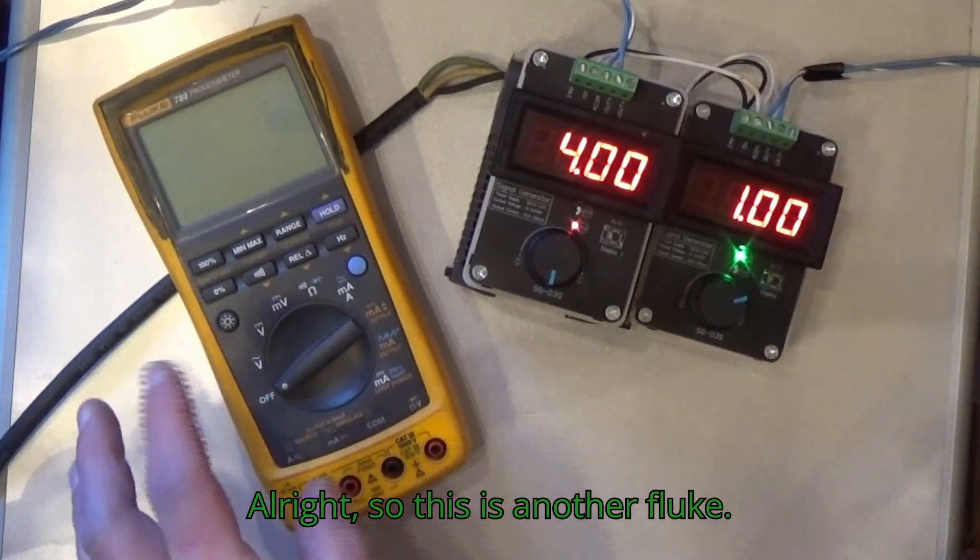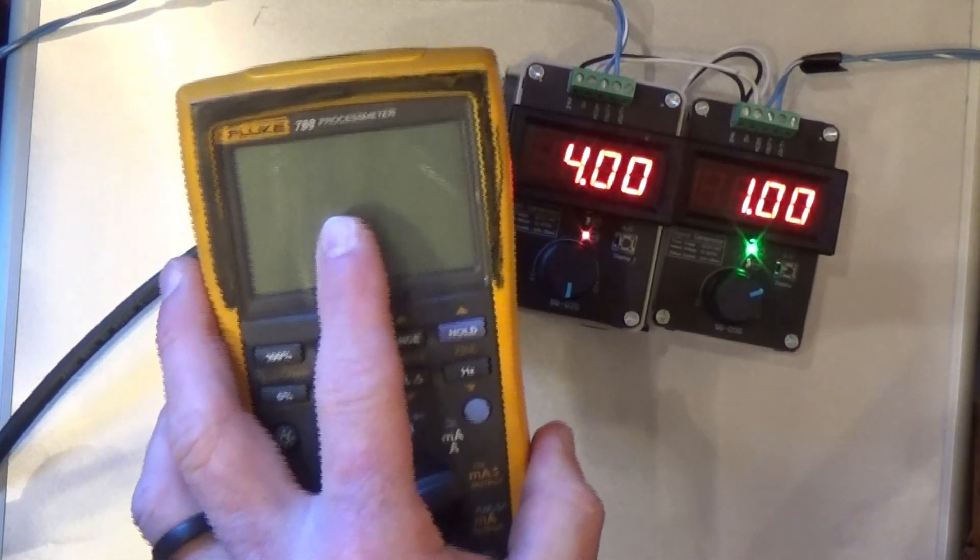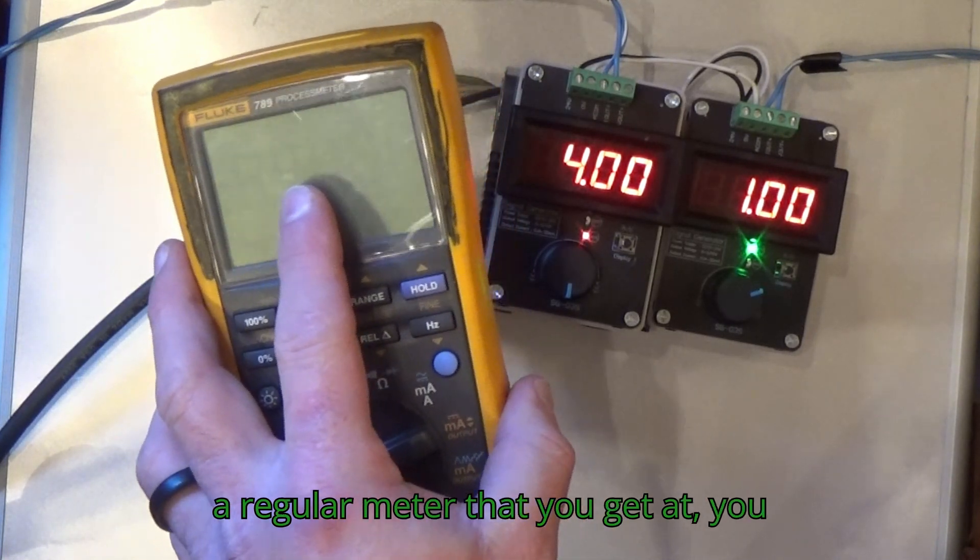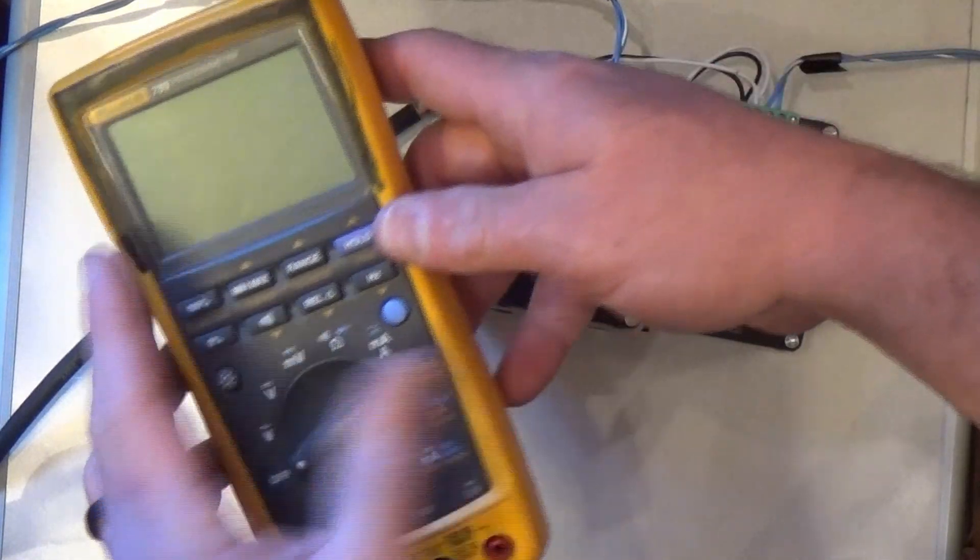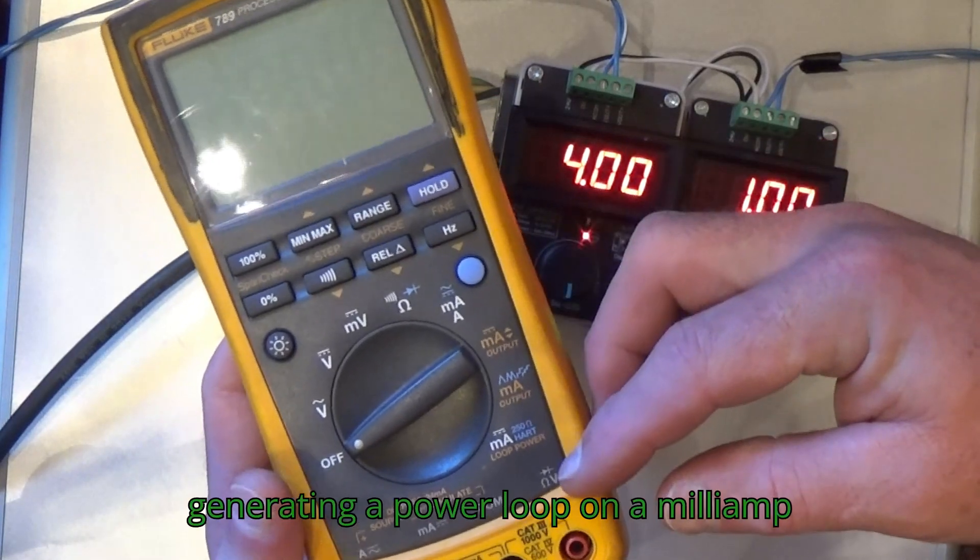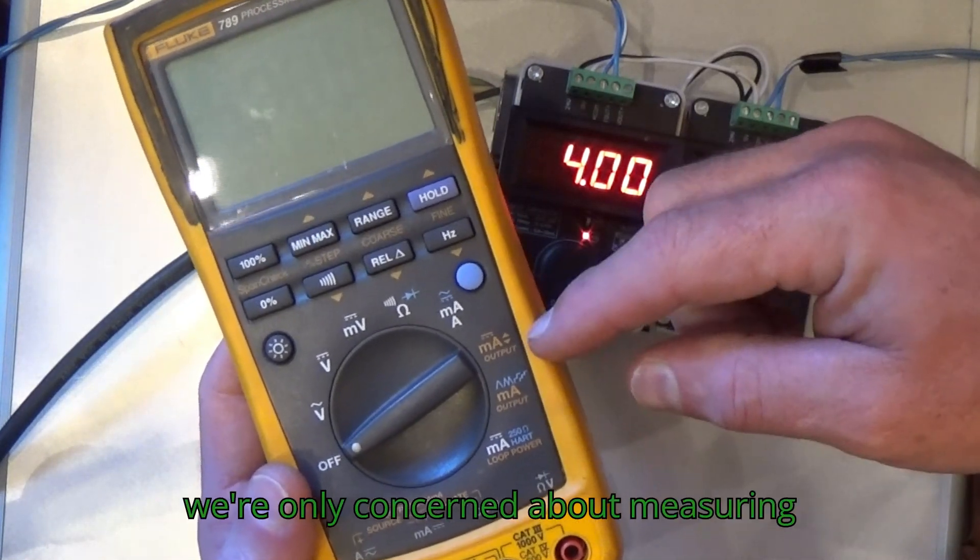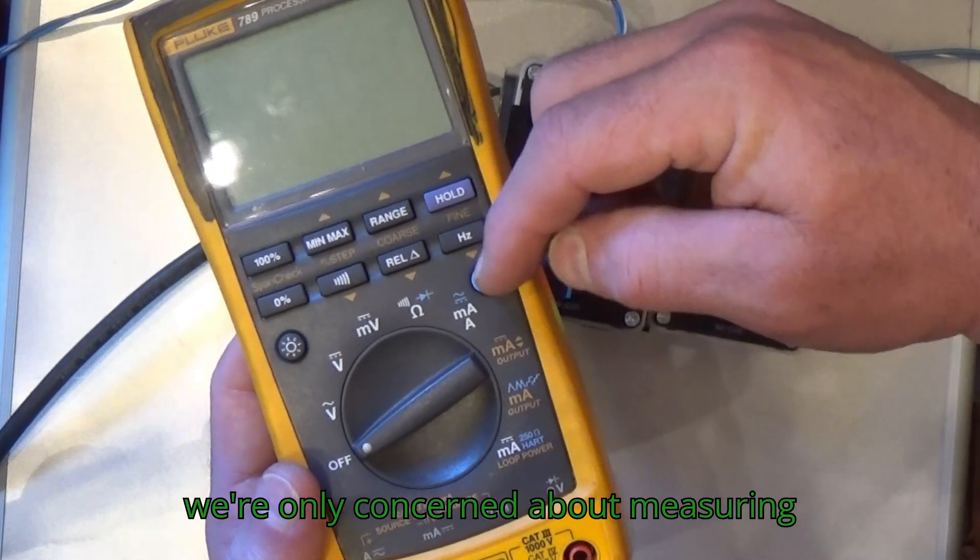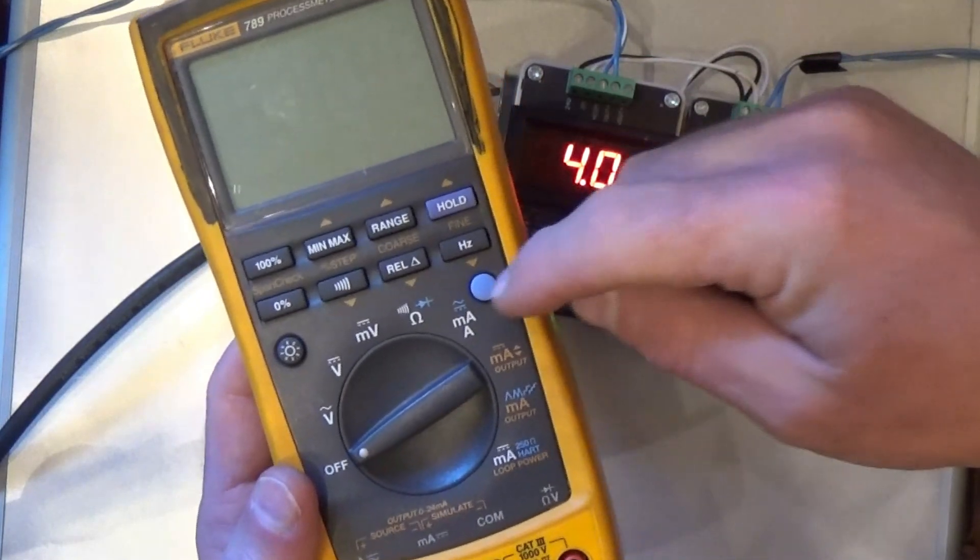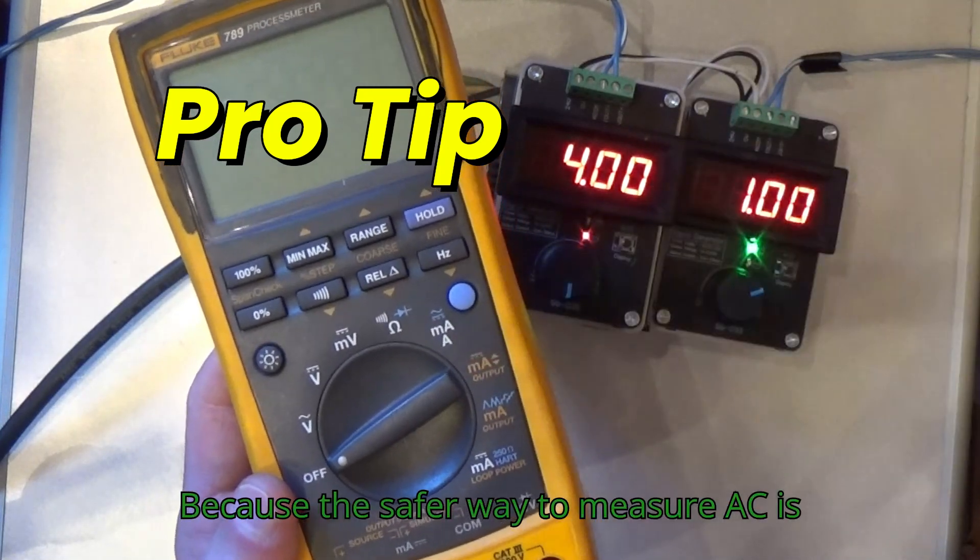This is another Fluke. This is a 789 process meter. It's quite a bit more expensive than just a regular meter you get at Lowe's or any big box stores. It also has a lot more capacity for measuring amps or even generating a power loop on a milliamp voltage. We're only concerned about measuring amps. You notice it has an AC and a DC symbol. We could technically do both, but we're only going to do DC because the safer way to measure AC is with the clamp meter.